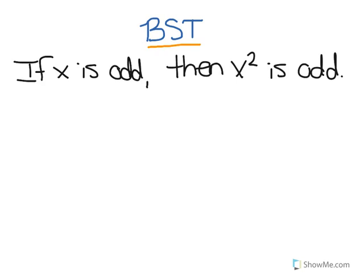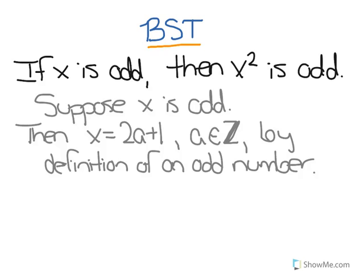So in our direct proof of this conditional statement, we're going to start with a true P. We're going to say, suppose x is odd. Then we know that x = 2a + 1, where a is an integer. This is the sign for integer, and this is the sign that a is an element of the integers, by definition of an odd number.